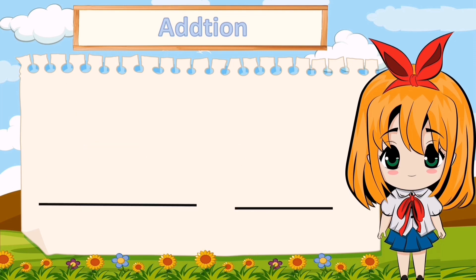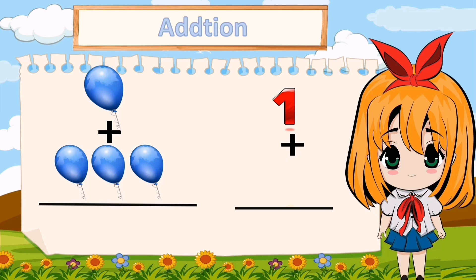Now let's check out our next example. We have one balloon plus three balloons. We have to find the total number of balloons. Let's start counting again. One, two, three, four. So totally we have four balloons. So one plus three equals four.